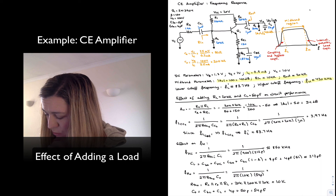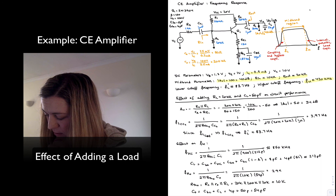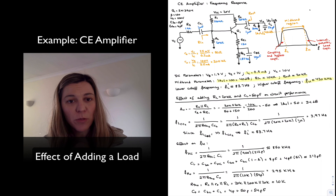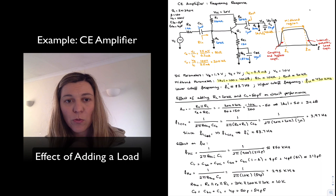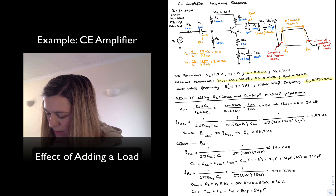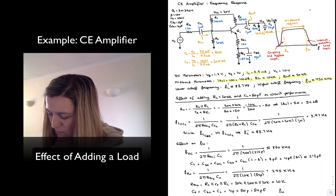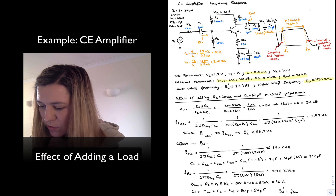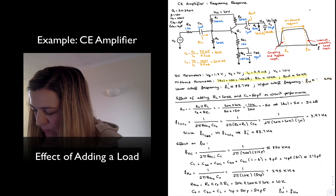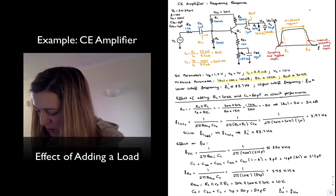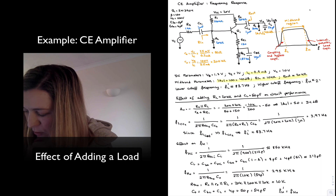Our new high cutoff frequency at the output is 295 kHz. The dominant high cutoff frequency is now the one due to the output, so FH prime is updated to 295 kHz.